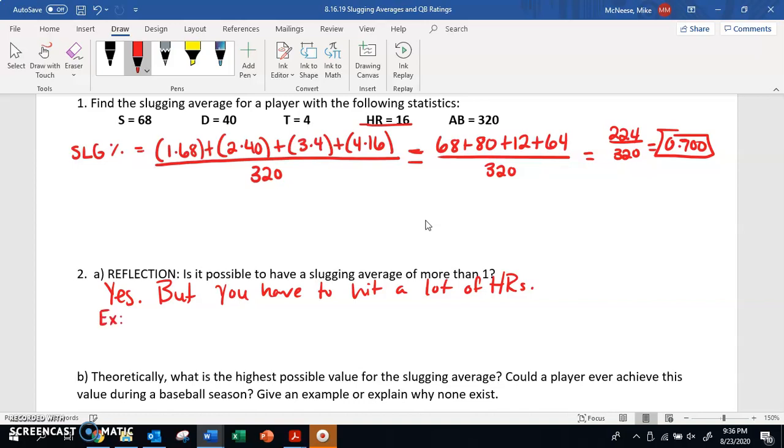As an example, let's say we have a person who gets 100 singles, 50 doubles, 10 triples, 30 home runs, and their at-bats is 320. We've got all these values here, and we just want to plug them into the same formula. We're going to get 1×100 + 2×50 + 3×10 + 4×30 all divided by our AB, which is 320.